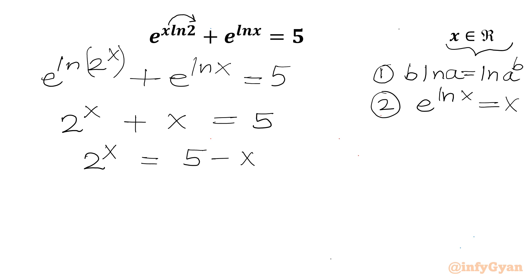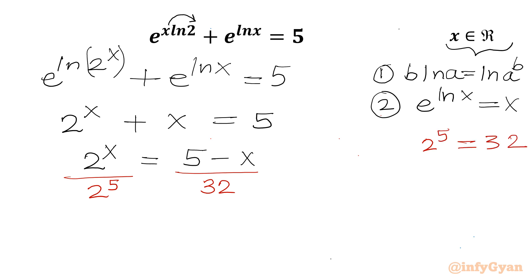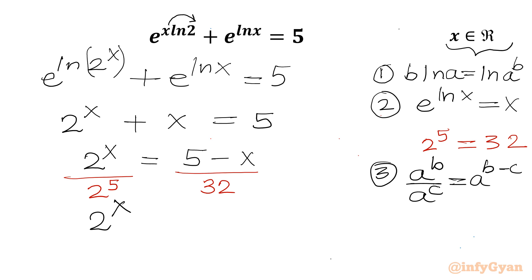Now we will divide both sides by 32, which we can write as 2^5. On the left hand side we have the same base 2 with different exponents, so using the property a^b divided by a^c equals a^(b-c), it becomes 2^(x-5). The right hand side becomes (5 minus x) divided by 32.